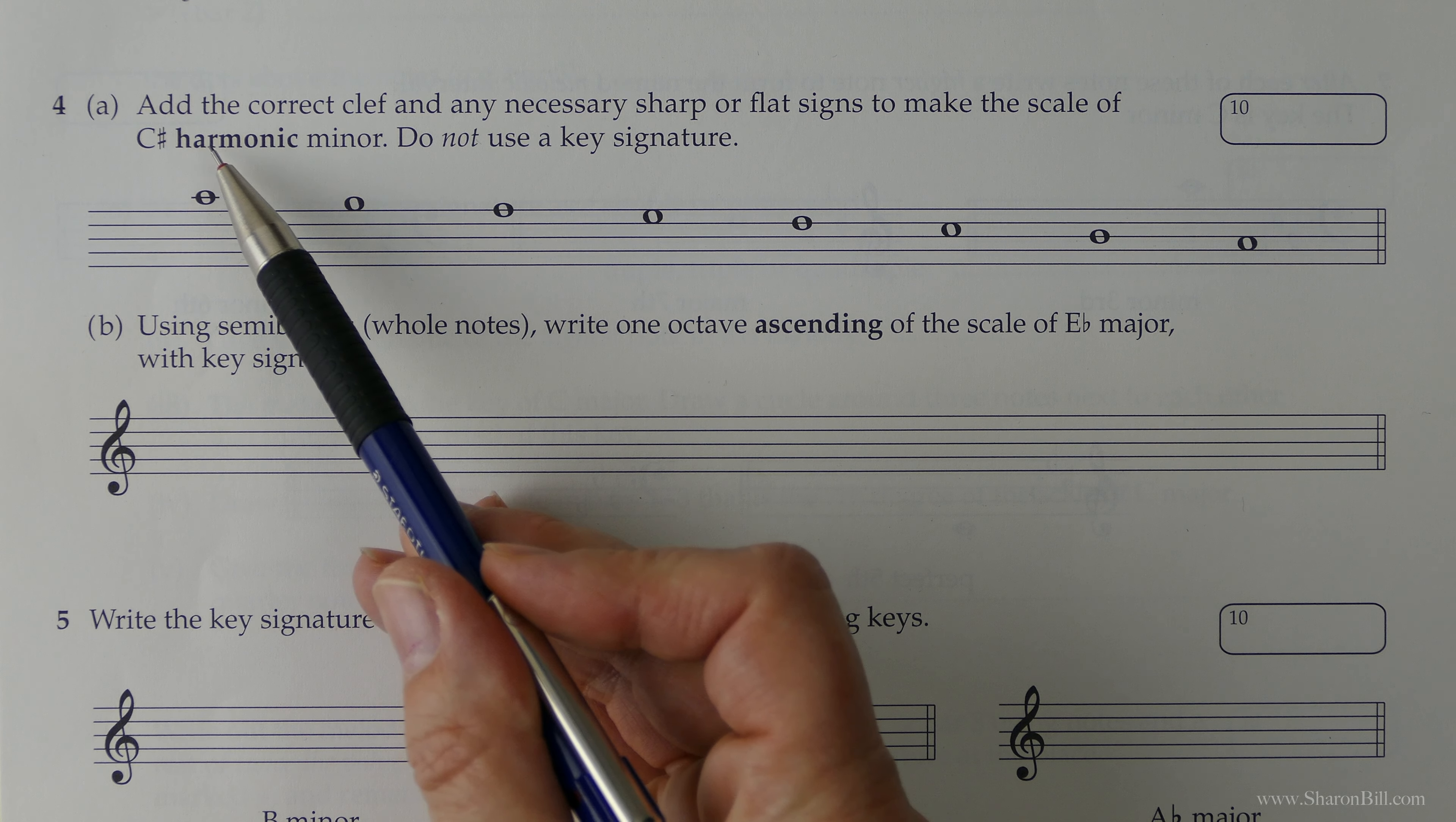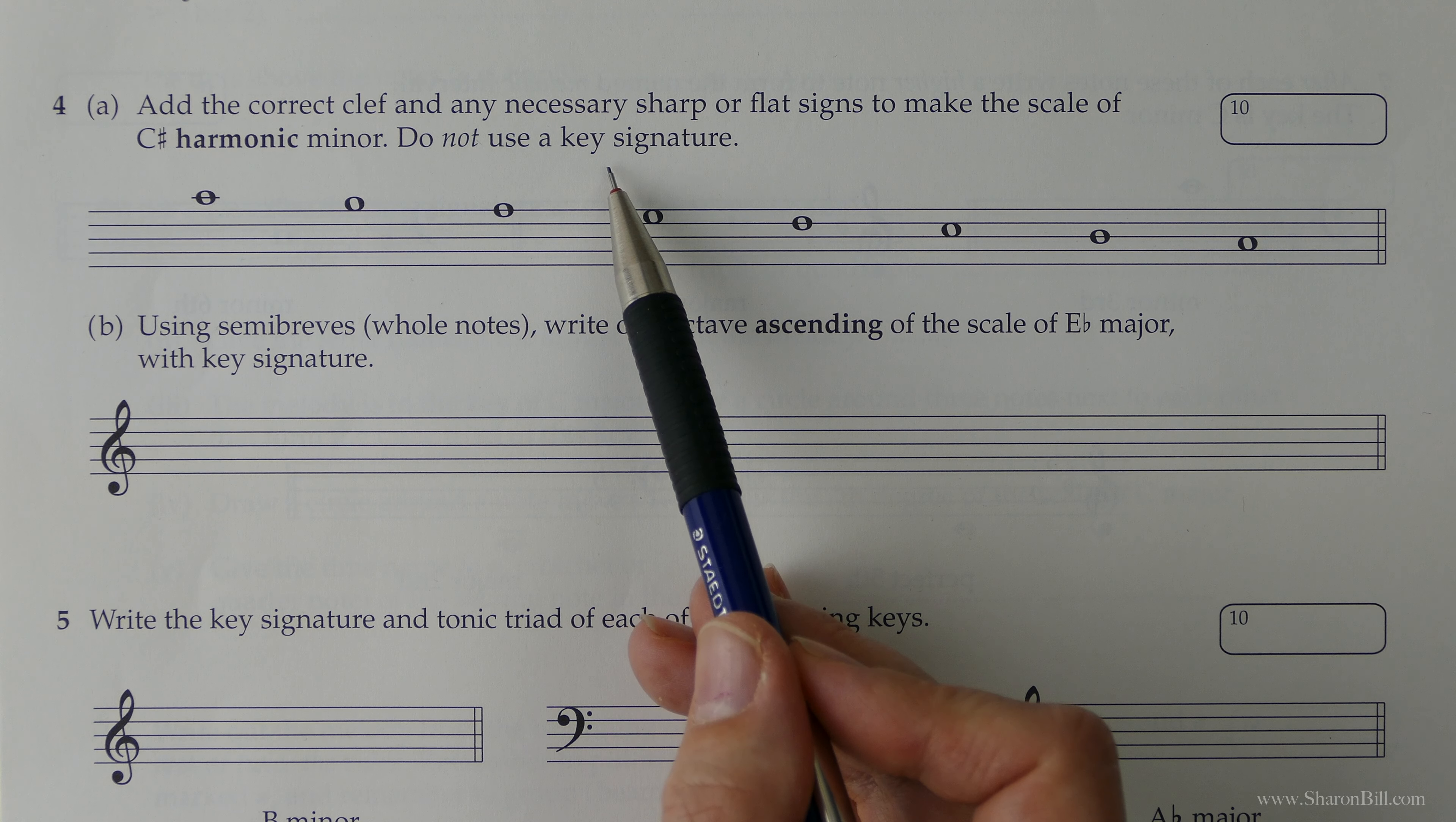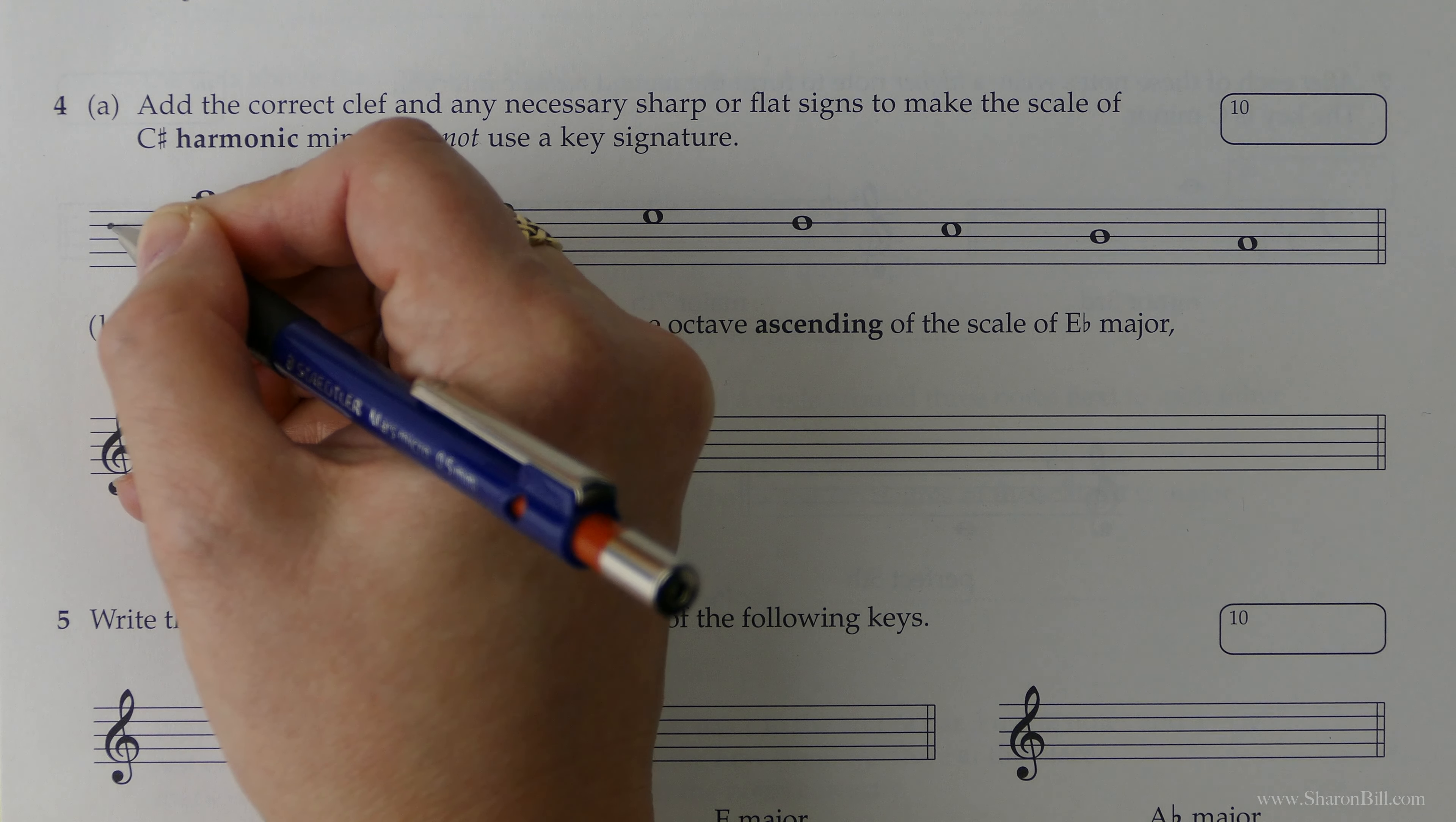We've got to do a few things here. We need to add the correct clef and then we need to add any sharp or flat signs to make the scale of C-sharp harmonic minor. Don't use a key signature, just use accidentals. Now, of course, C-sharp harmonic minor must begin and end on C-sharp. And for that to be the case, for this to be C, it needs to be bass clef. And so that's the first part quickly dealt with.